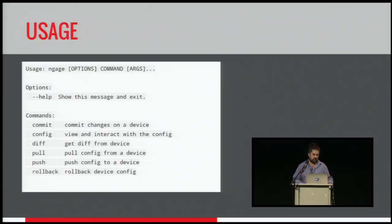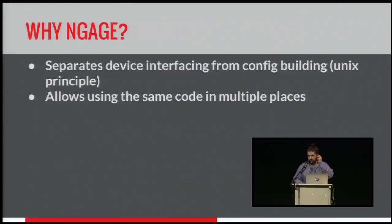Basic usage is very much like Junos, so as you can see, it just pushes and pulls files, commit, et cetera. The reason I have it like this — it started actually as an Ansible plug-in, and I wanted to use it outside of Ansible. I'm a very big proponent of the Unix philosophy, which is do one thing and do it correctly, so this aims to do that.